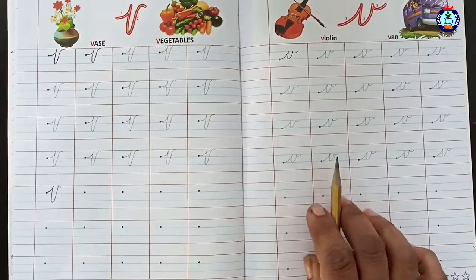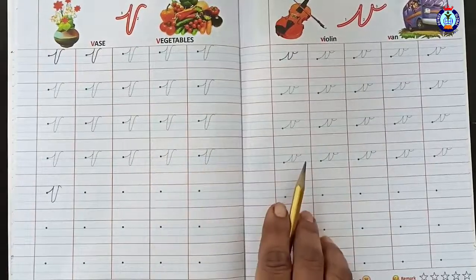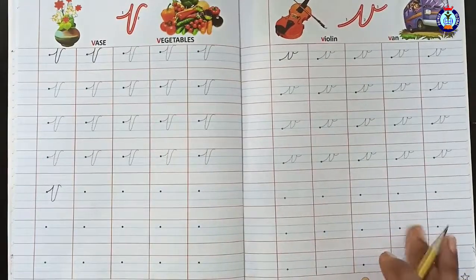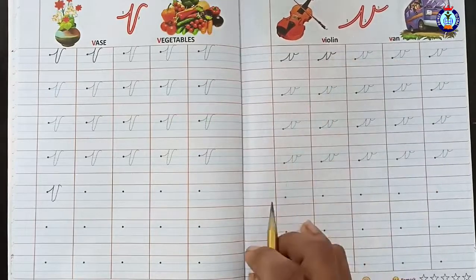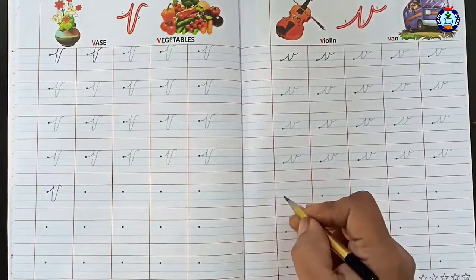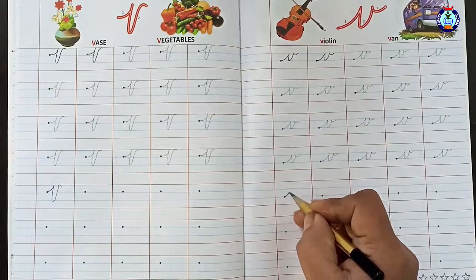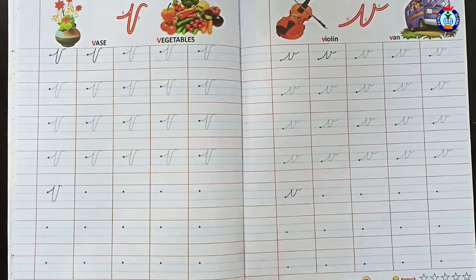This is cursive small letter V. This is capital, this is small. Small letter V is written this way. These four lines, dots to dots join. The lower line is blank where you can write letter V in capital form and small.